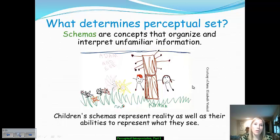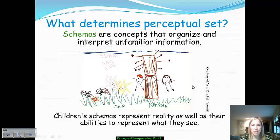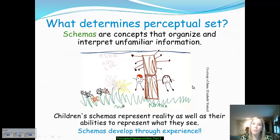What determines a perceptual set is something called a schema. A schema is our attempt at organizing and interpreting any kind of unfamiliar information. When you're first presented with certain concepts, your brain attempts to interpret and organize what those are — that's a schema. Kids' schemas oftentimes represent reality: when children are asked to draw something, it will usually be their family, siblings, parents, or what they see — which is also where you get fantastical creatures and imaginary friends. Schemas develop through experience, so this is very much an aspect of nurture. The more you're exposed to various experiences and stimuli, the more your schemas develop and the more you're able to organize what you're presented with.